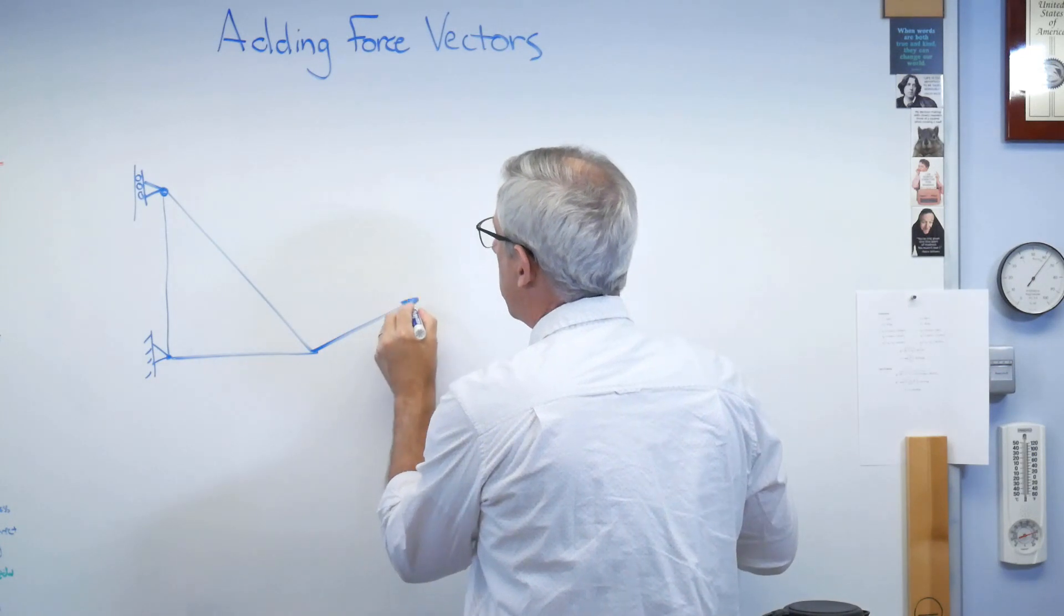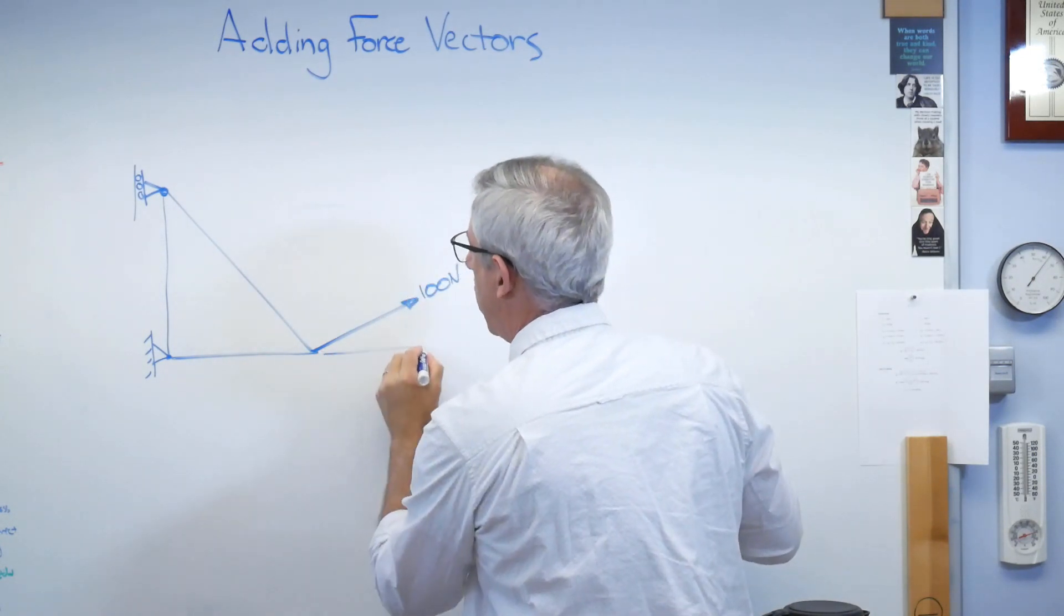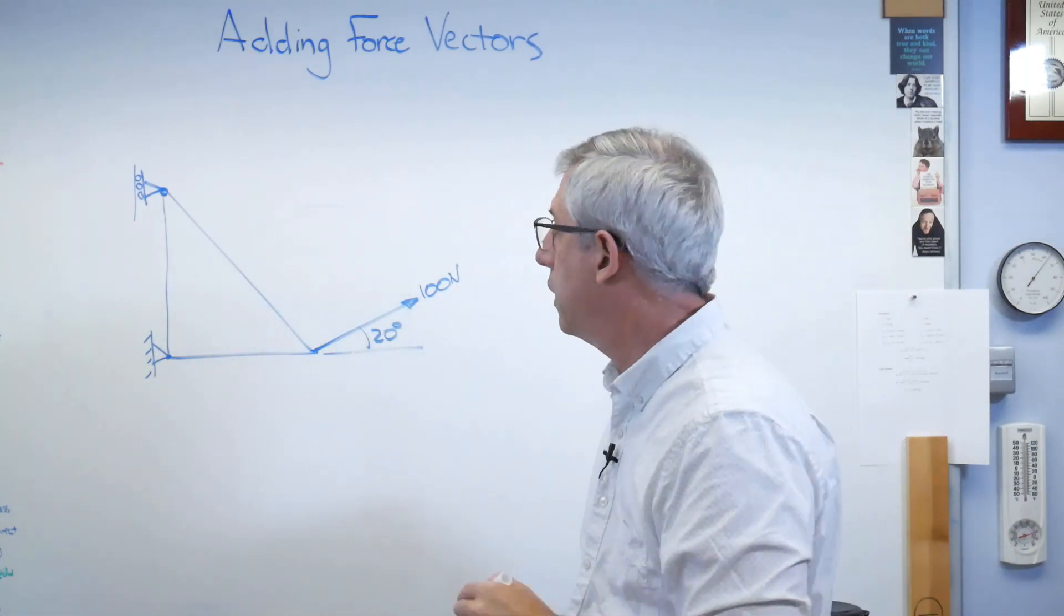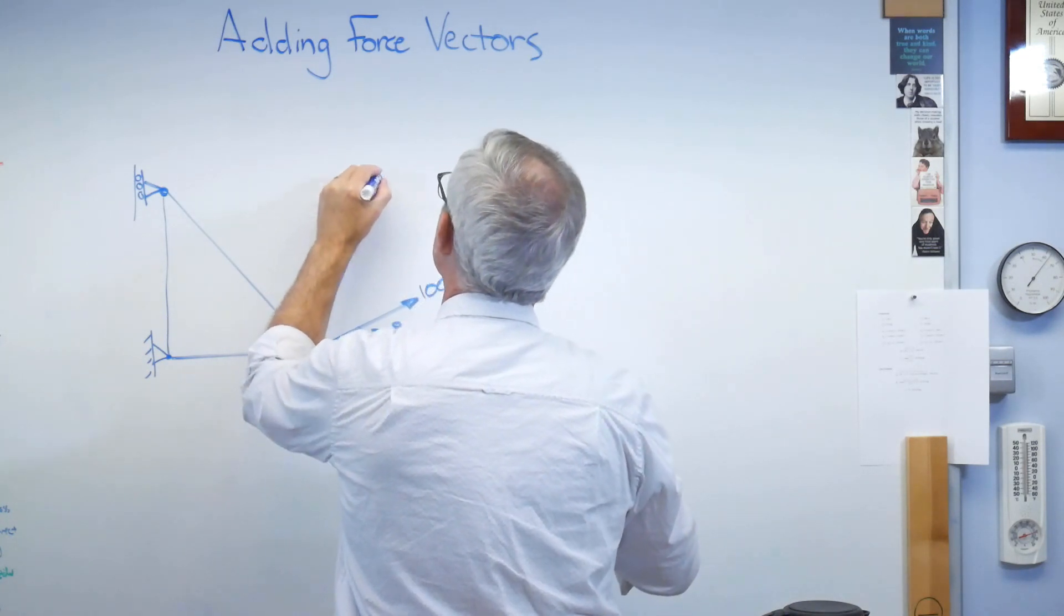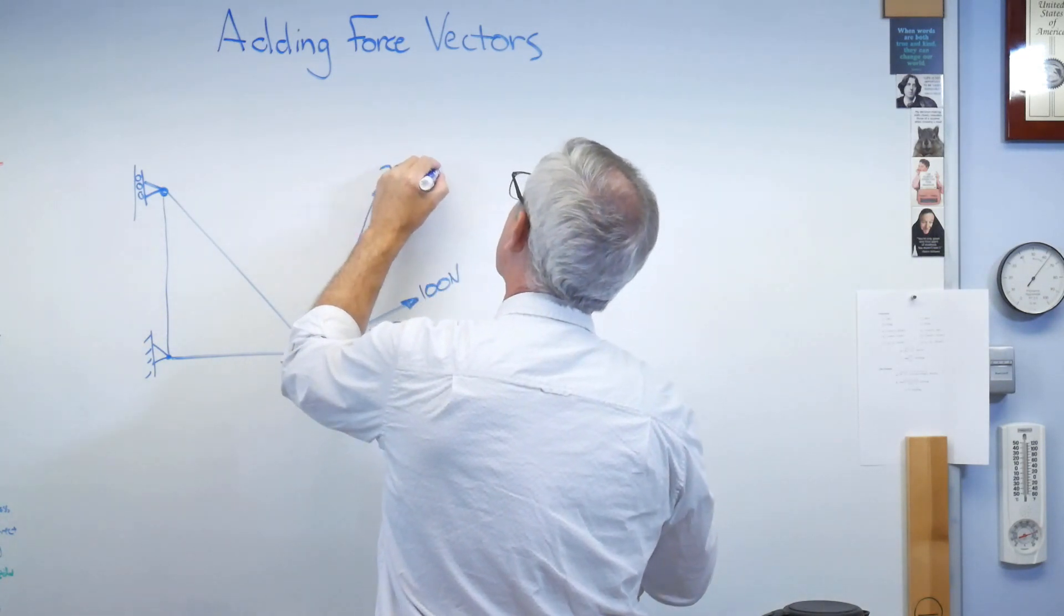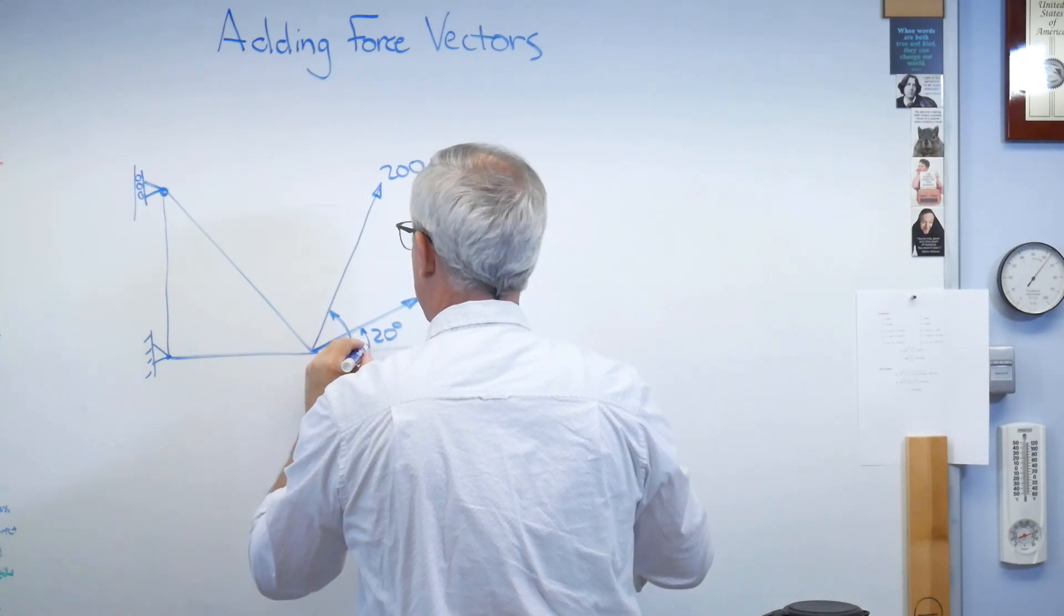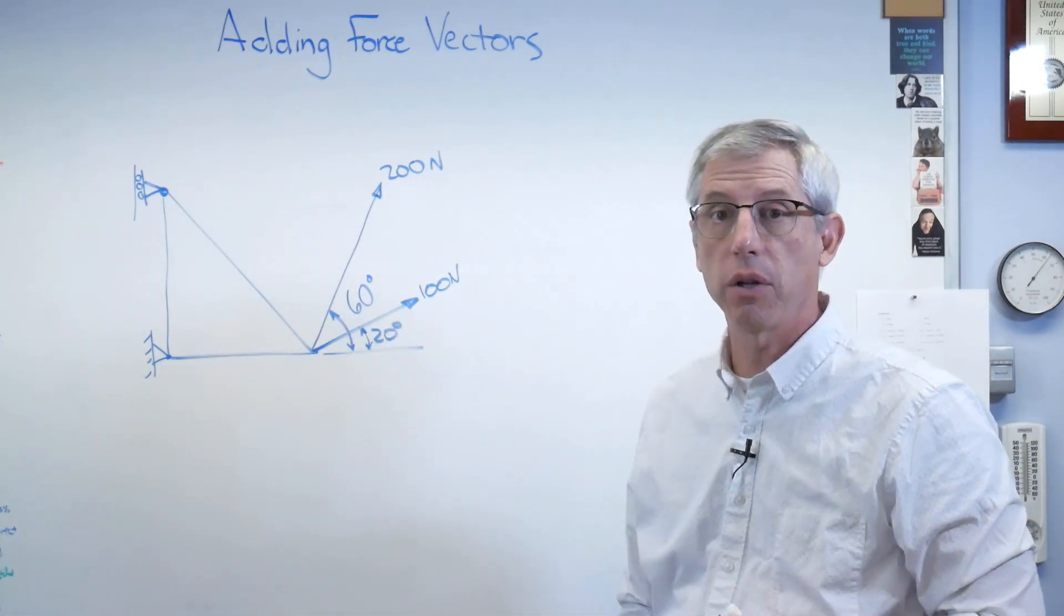So let's have 100 newtons coming off at an angle of 20 degrees to the horizontal, and let's have 200 newtons coming off at 60 degrees to the horizontal. So that's 60 degrees with respect to the horizontal.